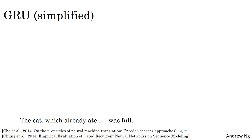A lot of the ideas of GRUs were due to papers by Junyoung Chung, Kat Cho, Gülçehre, and Yoshua Bengio. I'll sometimes refer to this sentence to motivate that, given a sentence like "the cat was...", you might need to remember that "cat" was singular to understand why it's "was" rather than "were". As we read the sentence from left to right, the GRU unit has a new variable called C, which stands for cell, for memory cell. The memory cell provides a bit of memory to remember whether the subject was singular or plural, so that even much further into the sentence, it can still work that into consideration.